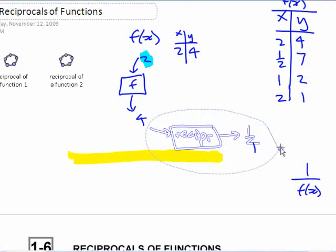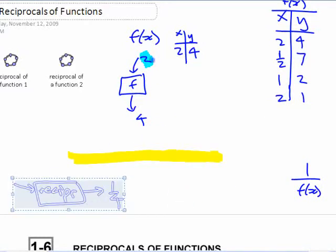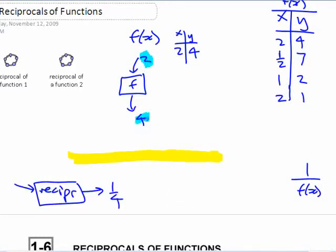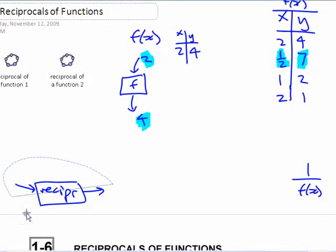Okay, before that was without this thing, right? That was just putting in a 2 and getting a 4, or putting in a half and getting a 7.